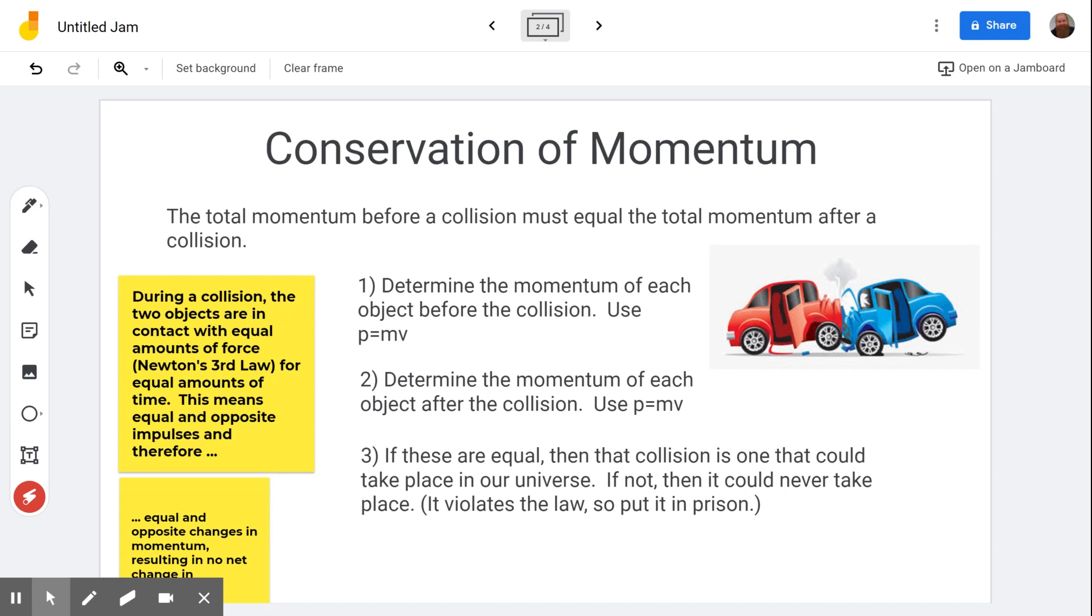And then finally, if the two values are equal, if the total momentum from number one is equal to the total momentum to number two, then it is a collision that could take place in our universe. If not, then it's something that would never happen because the way forces work follows these rules. That's just how it works. This is us describing what happens to nature. And so we would never see that collision taking place because it just would never happen. And these violate the law. So the concept builder has you put them in prison, put bars over them.